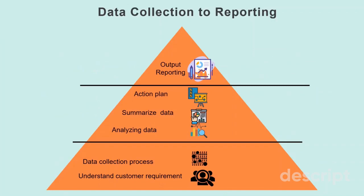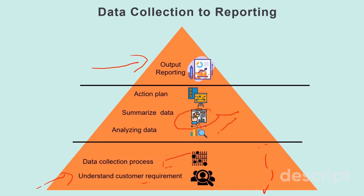Let's go through what processes are required to convert collected data into a reporting output. The first step is the data collection process of understanding the customer's requirement. Next is to collect the data, followed by analyzing and summarizing the data, and also creating an action plan if there are quality issues. And lastly, the report output that every stakeholder is waiting for weekly to check the current trend.